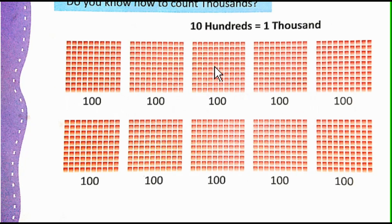100, 200, 300, 400, 500, 600, 700, 800, 900, 10 hundreds. So 10 hundreds is equal to 1000.